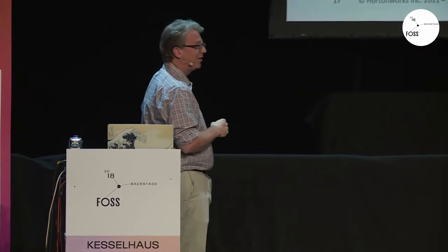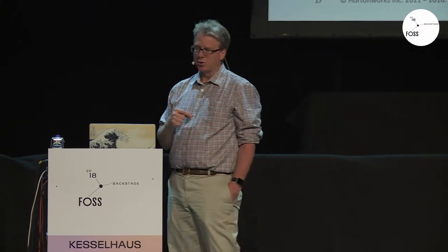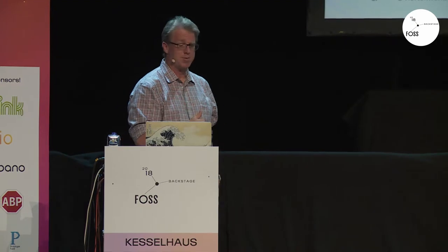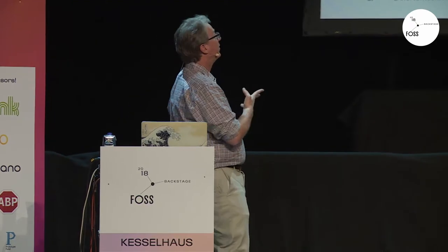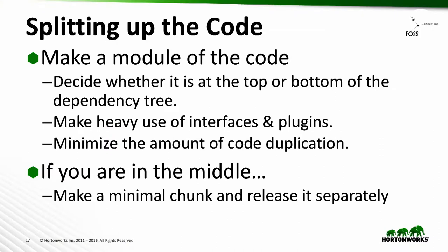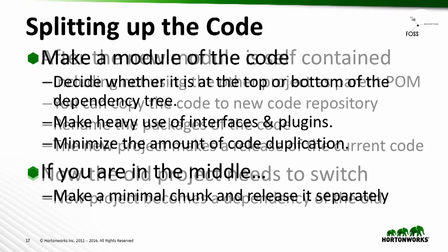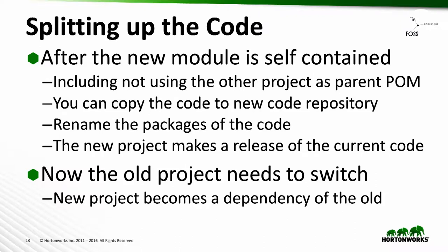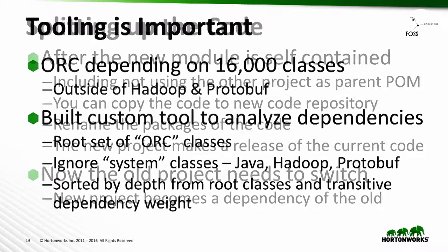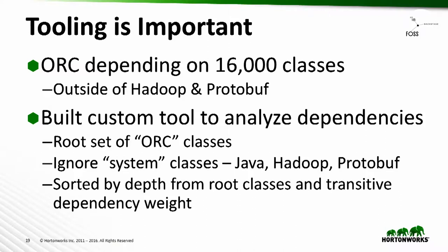So what did we do? The first thing you need to do is make a module of the code and decide whether you're at the top or the bottom of the dependency tree. Make heavy use of interfaces and plugins, and minimize code duplication. With ORC, we were in the middle, and that's difficult. ORC depended on 16,000 classes — excluding all of Hadoop and Protobuf. Multiple attempts to separate it failed because things were just too tangled up.